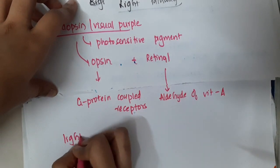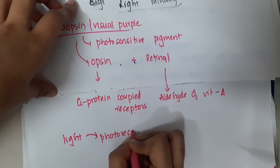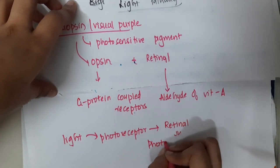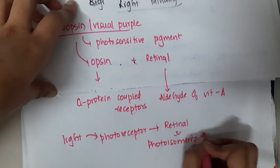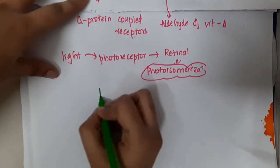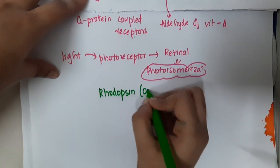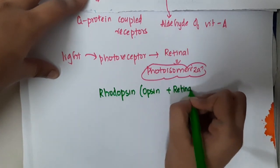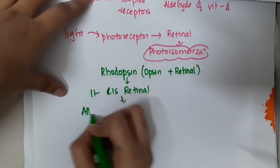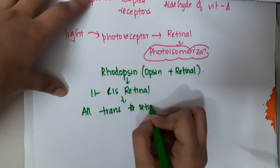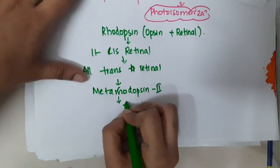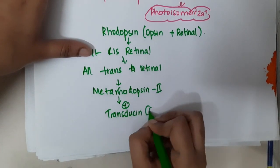When light strikes the photoreceptors, a process called photoisomerization occurs in the retinal. The retinal in rhodopsin is 11-cis retinal. This 11-cis retinal gets converted to all-trans retinal, which then forms metarhodopsin-2. Metarhodopsin-2 activates transducin, which is the G-protein.